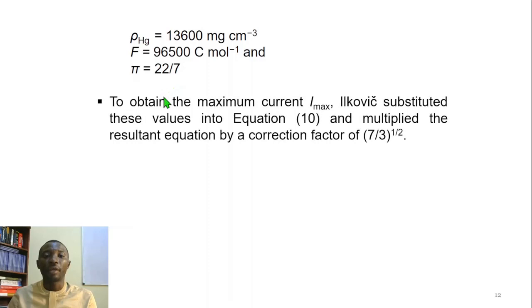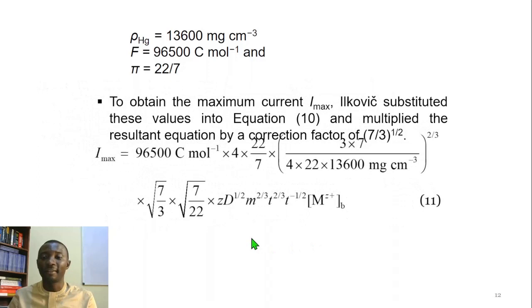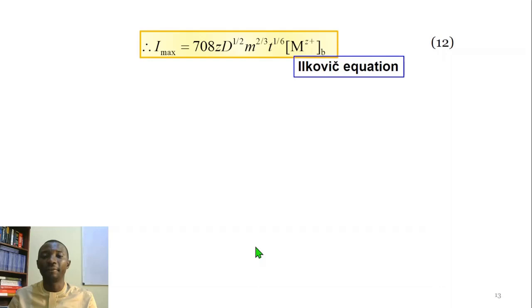So, to obtain the maximum diffusion current, Ilkovič substituted these values into equation 10 and multiplied the resultant equation by a correction factor of (7/3)^(1/2). That gave equation 11. And equation 11 evaluates to equation 12, which is the Ilkovič equation for maximum diffusion current.